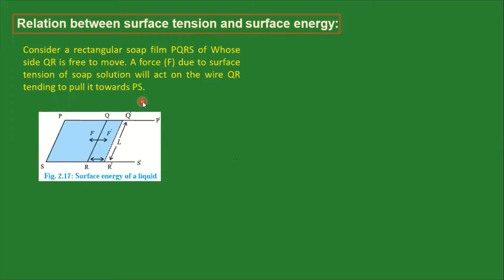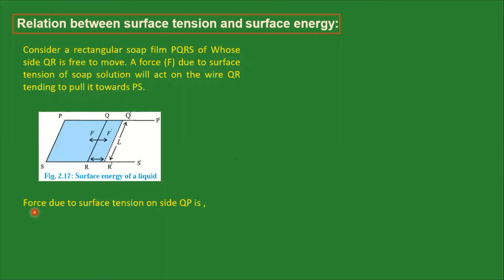This is a rectangular soap film PQRS, whose side QR is free to move. We can move this side QR to a new position Q'R'. This side is moved towards side PS due to the force due to surface tension. When we consider this soap film PQRS, side QR experiences a force due to surface tension in that direction.